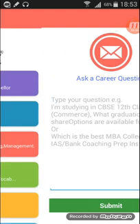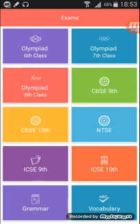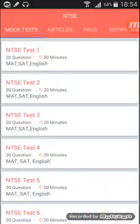There is an Exams tab — clicking on it shows Olympiad sixth class, Olympiad seventh class, similarly for eighth class, then CBSE ninth, CBSE tenth, and finally NTSE. It also has ICSE ninth, ICSE tenth, grammar, vocabulary — it's a very helpful app. I'm clicking on NTSE right now.